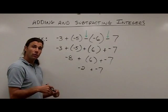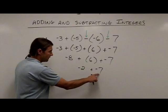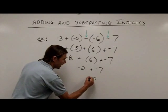Bring down the rest of the problem. And then the last step is a negative 2 plus a negative 7. So when I add these together, I'm going to get a negative 9.